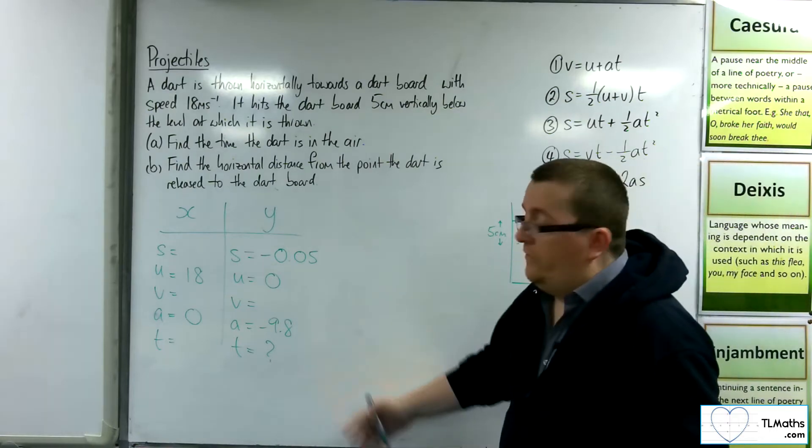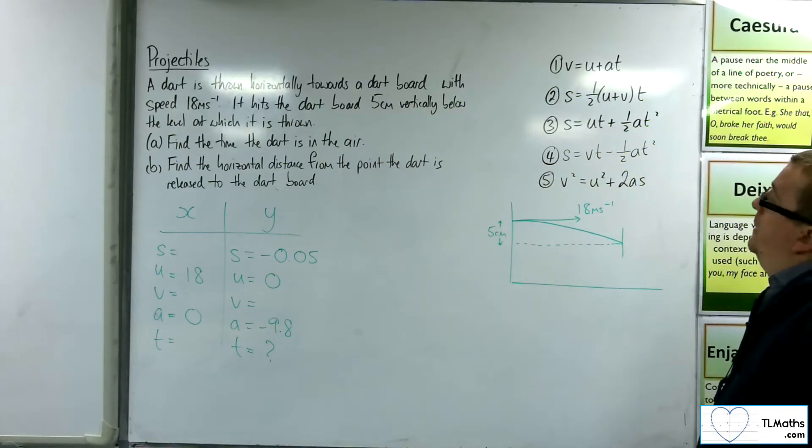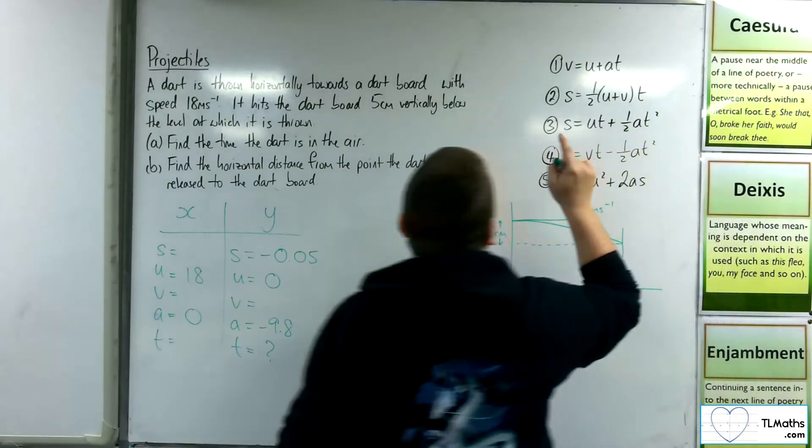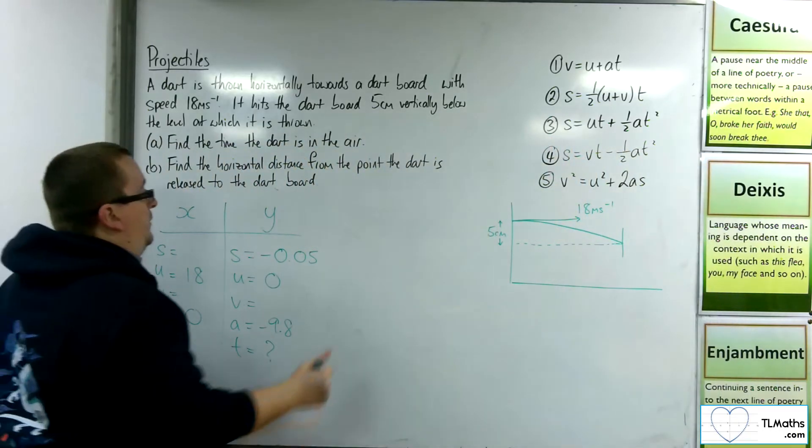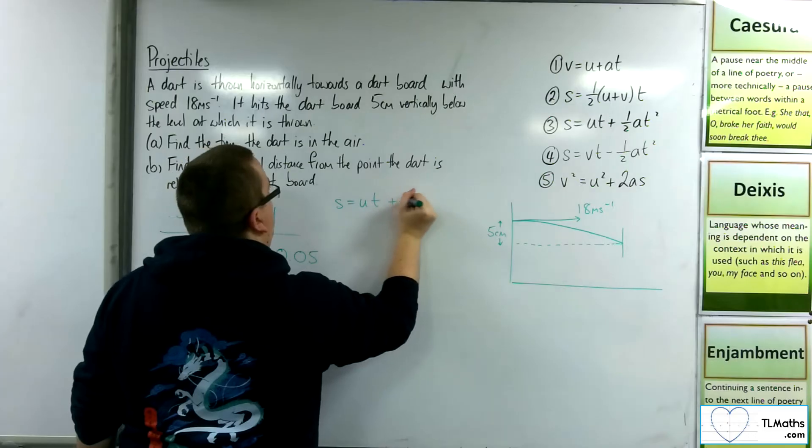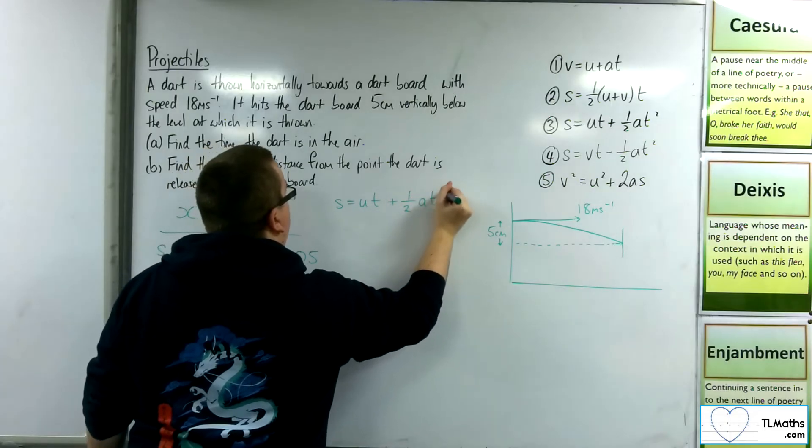So this gives us enough information to find t. So we want the equation that doesn't have v, so that's number 3. So s is equal to ut plus half at squared.